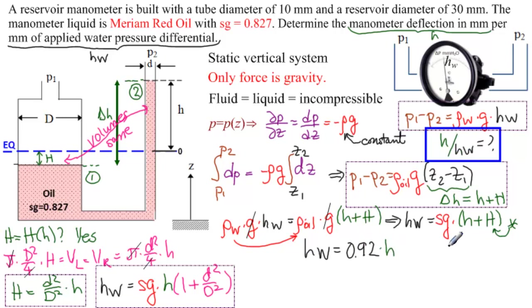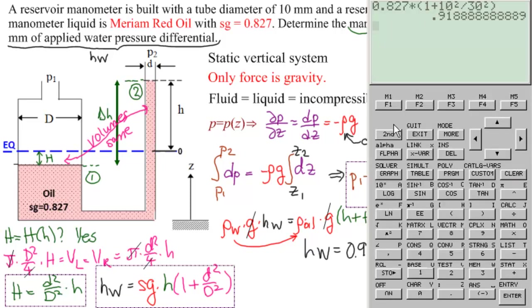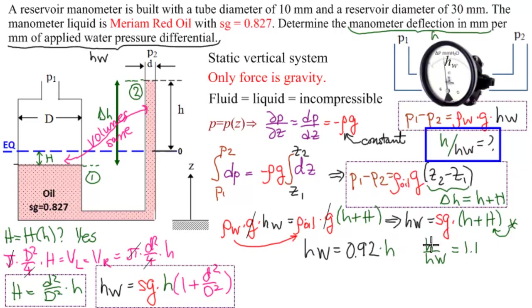What did we want? We wanted h over hw. So h over hw equals 1 over this. So 1 divided by 0.92 gives us 1.1. So the answer to our problem is h over hw equals 1.1.